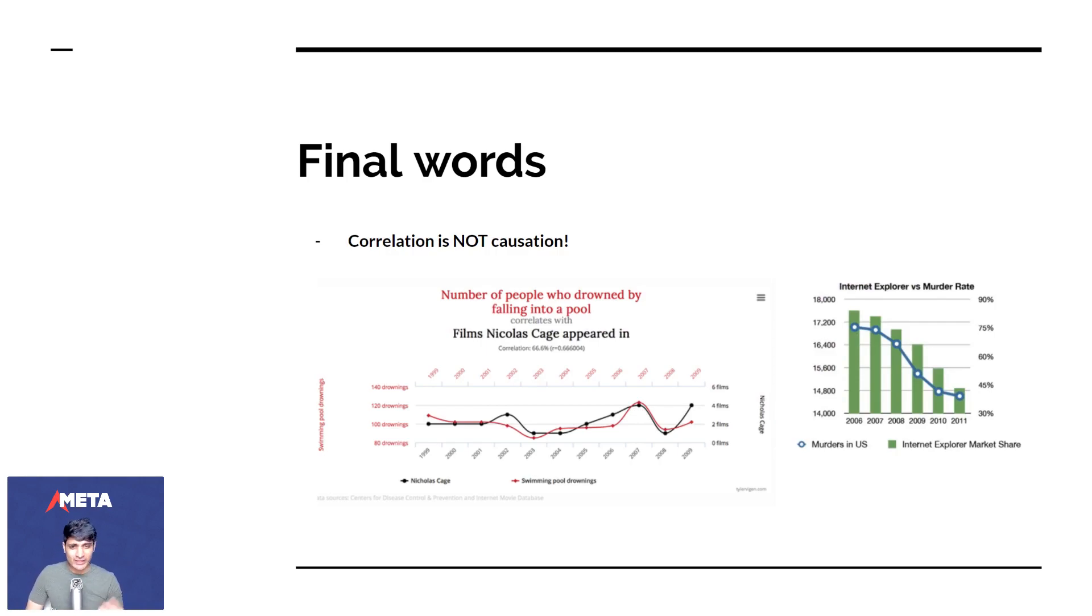Here are two funny examples. The number of people who drowned by falling into a pool correlates very strongly with the films Nicolas Cage appeared in. The correlation is very high - the R value is 0.66, which is a high value. And as you can see from this graph, these two things happen in a very strong correlated manner, but we know it's not true. This is rubbish. These are two random different things that are just put together just because the graphs look the same.